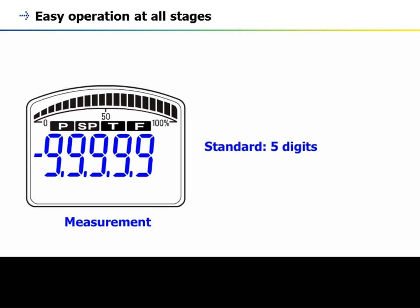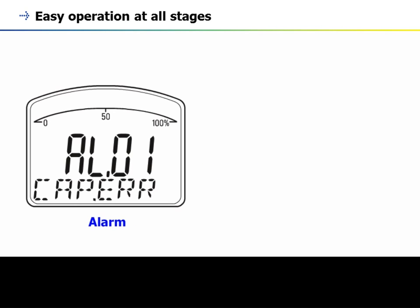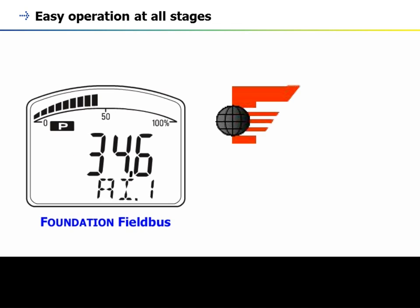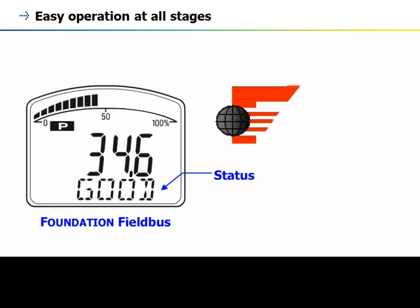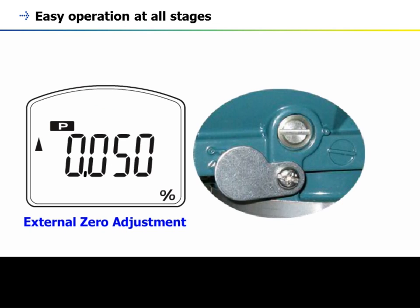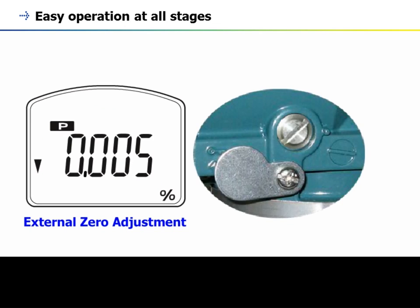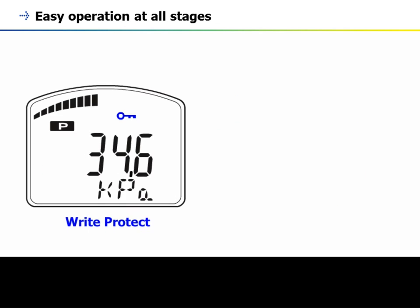A 5-digit number display is standard, with 6 digits for multi-variable. Additional display items include alarm number, alarm message, block tag, parameter name, status, external zero adjustment, and write protect.